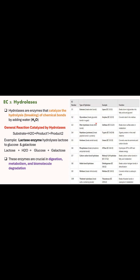The subclassification of hydrolases is based on the bonds which are hydrolyzed by a particular hydrolase. The first subclass is esterases, which break ester bonds — an example is lipase. The second subclass is glycosidases, which break the glycosidic bonds present in sugars, and an example here is amylase. There are other subclasses of hydrolases as well.